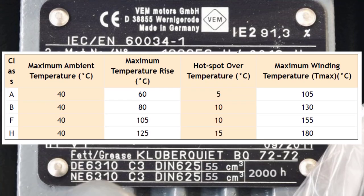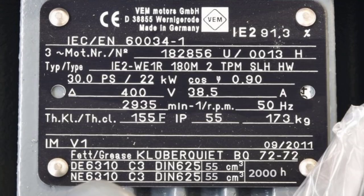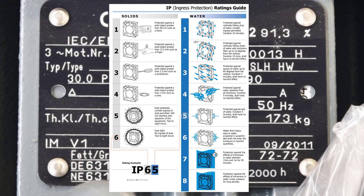The insulation class describes the ability of the motor winding insulation to handle heat, which affects insulation lifetime. There are four classes: A, B, F, and H. In our case, the insulation class is F, meaning the maximum temperature the windings can withstand is 155°C. IP stands for Ingress Protection and has two numbers: the first describes protection against solids and dust, and the second describes protection against water and moisture.